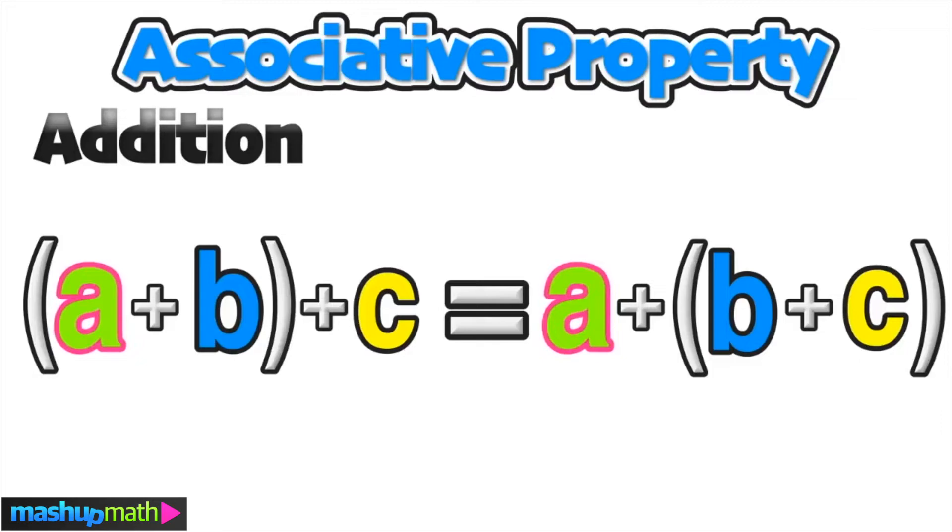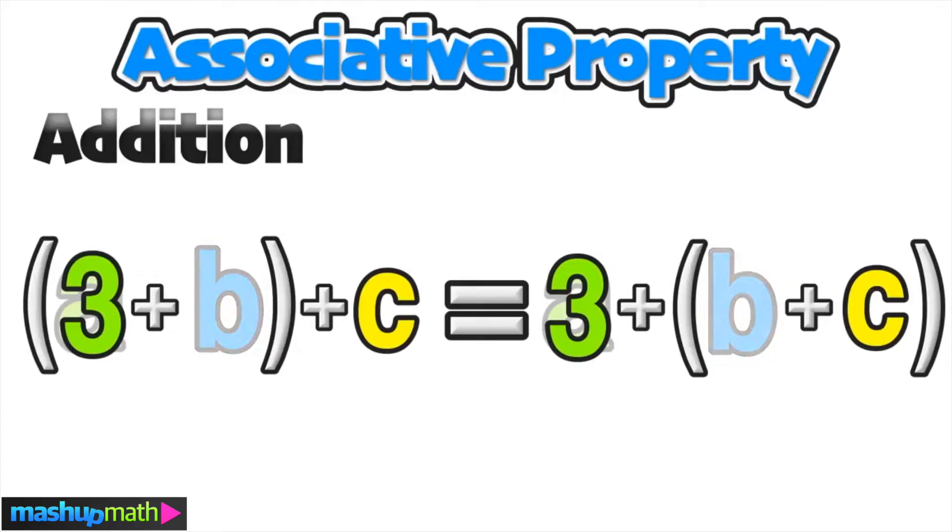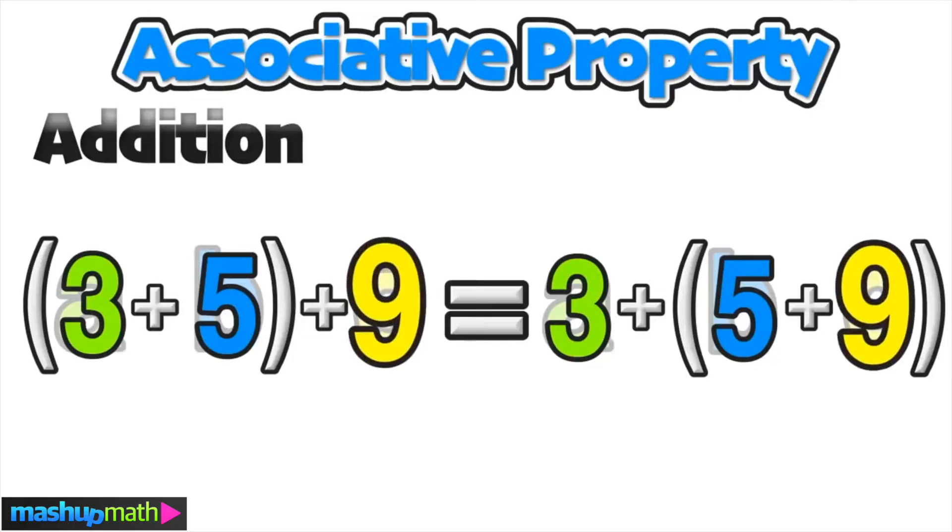Let's get some numbers involved here. We're going to replace the a term with a value of 3, the b terms with a value of 5, and we'll replace the c terms with a value of 9.